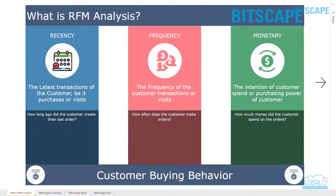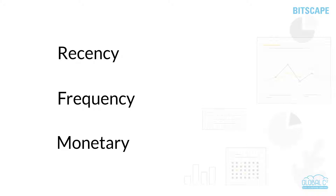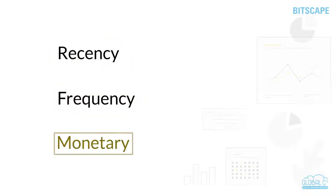RFM is one of the most widely used techniques for selecting significant customers. RFM analysis empowers personalized marketing, increases engagement, and ultimately improves sales. RFM stands for Recency, Frequency, and Monetary Value. Recency refers to the number of days or months since the last purchase was made by a customer. Frequency denotes the number of purchases in a certain time period. Monetary refers to the total amount of money spent by a customer during a specific period.